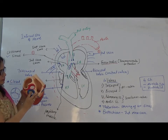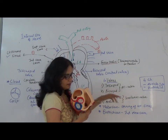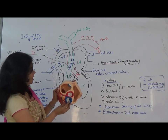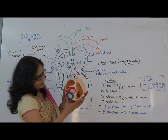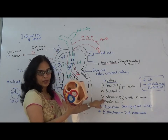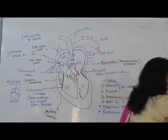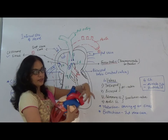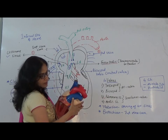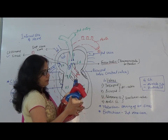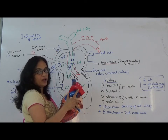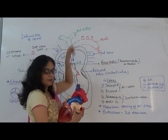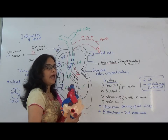The semilunar valves are also visible: the pulmonary semilunar valve (blue color) guards the pulmonary artery, and the aortic semilunar valve (red color) guards the aorta. The aorta leads to systemic circulation, and the pulmonary artery leads to pulmonary circulation. Hence the heart supports a double circulation system.